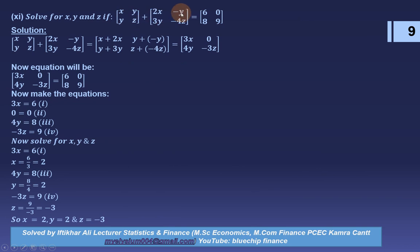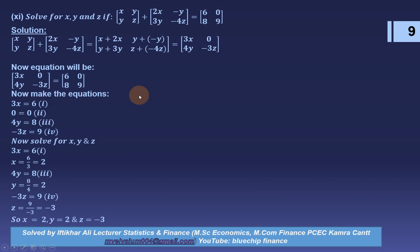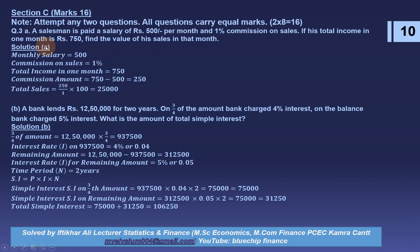Question 11: solve for x, y, and z given the matrix equation involving x + y, y + z, 2x − y, and 3y − 4z equals [6, 0, 8, 9]. This is the same question asked in the 2018 supplementary paper. The solution is x = 2, y = 2, and z = −3.